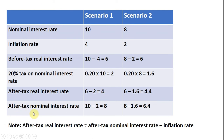If we wanted to get the after-tax nominal interest rate, we take 10 and subtract the size of the tax from it, so the after-tax nominal interest rate is 10 minus 2, or 8%. Doing a similar thing for scenario 2, 8 minus 2 gives us the before-tax real interest rate of 6%.